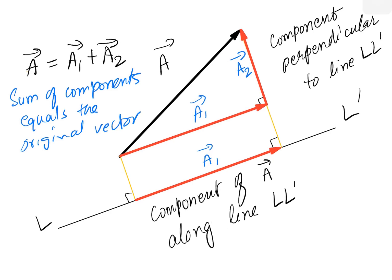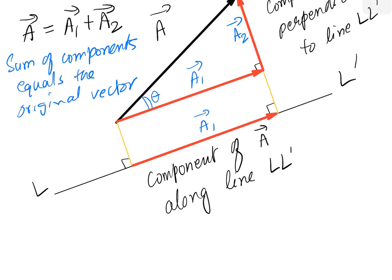Now let's say that this angle here is theta. Then for this right-angle triangle, we can say A1 — where A1 is the magnitude of A1 vector — is equal to A cos theta. And A2 will similarly be equal to A sin theta.